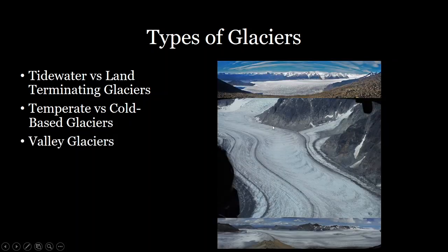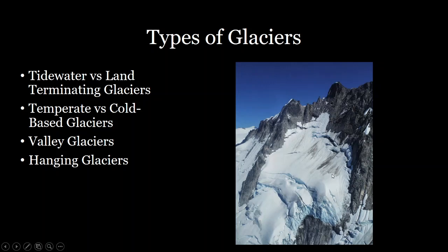The next type of glacier is a valley glacier, defined by where it's flowing. This is the Gilkey Glacier as well as the Llewellyn Glacier. Valley glaciers flow in valleys — they fill up the valley floor and don't cover any of the mountain tops or peaks; they just flow downhill. That's versus a hanging glacier, which has snow accumulating on the side of a steep mountain face and flows downhill in catastrophic ice falls.